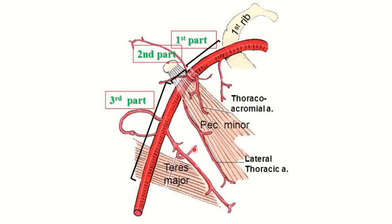Looking at the diagram, this is the first part — from here the superior thoracic artery arises. This is the second part — from the second part, two branches: thoracoacromial and lateral thoracic. From the third part, it gives the subscapular artery and the anterior and posterior circumflex humeral artery. So from the third part, three branches arise: subscapular, anterior, and posterior circumflex humeral artery.